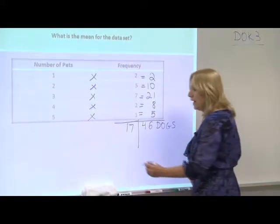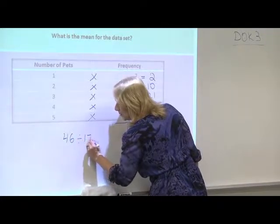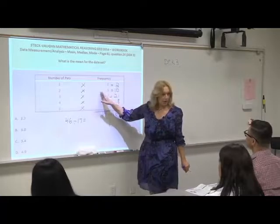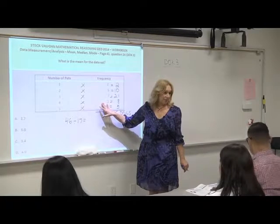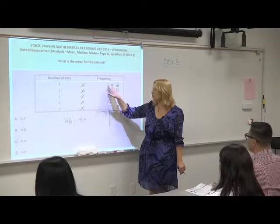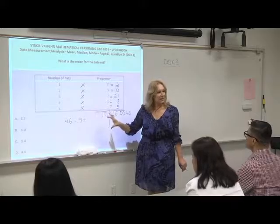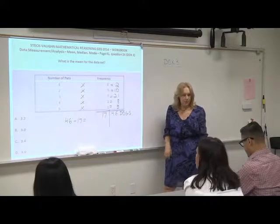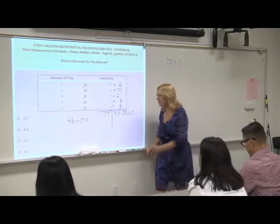So you need to divide now the 46 by 17. Everybody, calculator, let me know what you get. That's what makes it a level three, because many students would just have divided by five. Instead of understanding that you have two here and five here, you really had 17 people involved in this. Perfect. So what is the mean? 2.7.